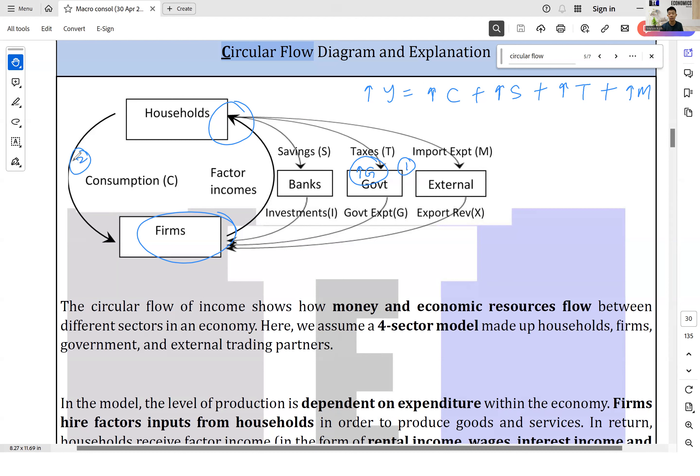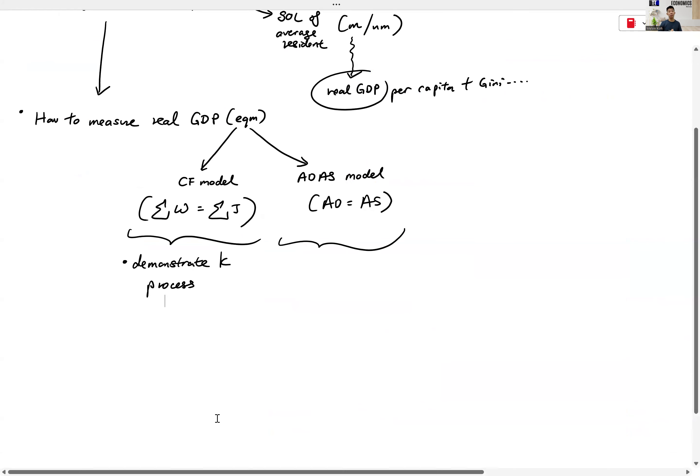So if not for Keynes' circular flow model, it wouldn't be so easy to understand the multiplier. You look at your AD shifting one time, two times, three times, it's still not very clear. So this is a lot clearer when you have your circular flow model. Are we okay? Later I'll tell you the kinds of questions that can appear for circular flow. But for now, it suffices to know that he came up with two models to teach us different things. They call him the father of macroeconomics. Then, who is the father of microeconomics? Adam Smith, the one who came up with the idea of the price mechanism.